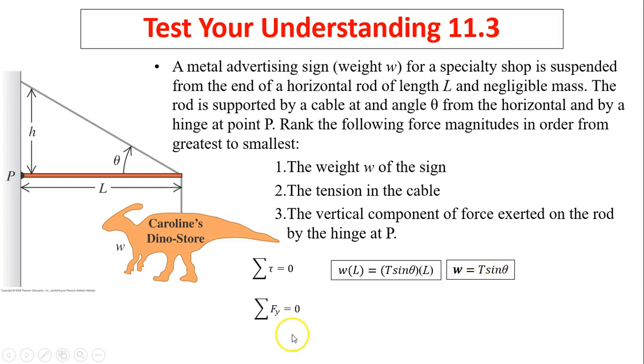The second part is force in the y direction equals zero. The force in the y direction: W is down, T sin θ and Py should be up. I assume Py is up. But because W equals T sin θ, that means Py equals zero. From the top, we also know T has to be bigger than W. So the final answer is T is bigger than W, bigger than Py.